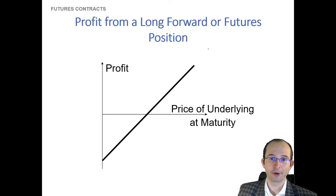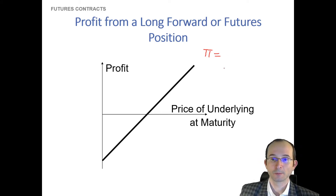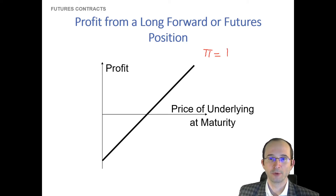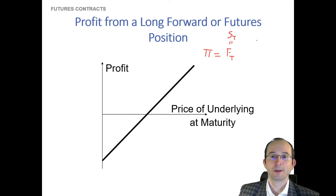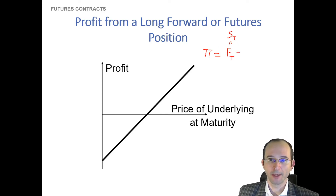Your payoff or profit for a long position is actually the value of the thing you are receiving. We can say it's the futures price at the end, at maturity — let's call it time T. Remember, we know that at maturity the futures price should converge to the spot price, so we could also put the spot price here at maturity, S_T. That is what we receive once we have bought the asset. And what do we pay for it? We pay the futures price or forward price that we agreed back at the initial period.